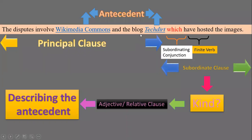Now dear children, look at this sentence — this is from the first slide, from where the story begins. The disputes involve Wikimedia Commons and the blog Take Dirt, which have posted the images. Here you can see the dispute involves Wikimedia Commons and the blog Take Dirt, so this is a principal clause. Look at the other part — this is a subordinating conjunction and this is a finite clause, which makes it a subordinate clause. But what kind of subordinate clause? Definitely it is an adjective or relative clause.